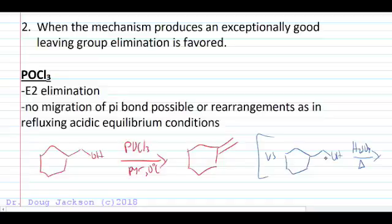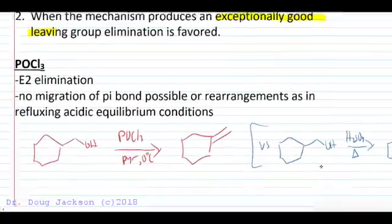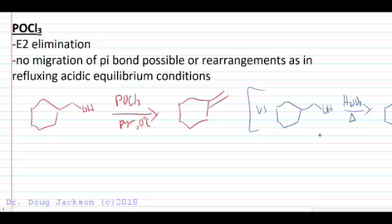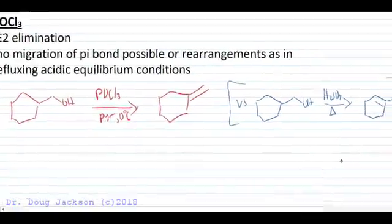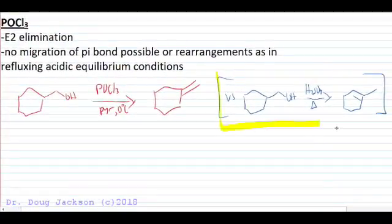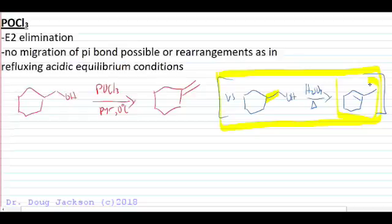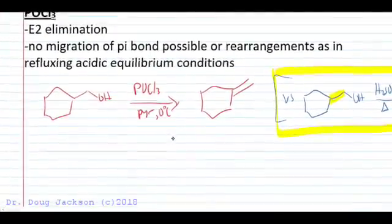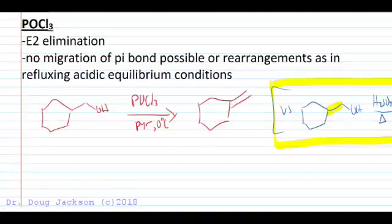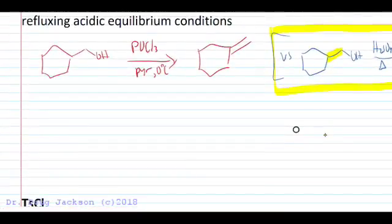Our next category here is elimination. If we're going to form a good leaving group, especially an exceptionally good leaving group, but no good nucleophile, we're going to see elimination instead of substitution. We're going to see pyridine used as the solvent in this reaction with phosphorus oxychloride. We're going to get an E2 mechanism, and because of that, we'll see no migration of the pi bond. In hot sulfuric acid, we get migration through sequential reactions in equilibrium, but with phosphorus oxychloride, we can stop after our first E2 elimination and have more control over the product mixture.